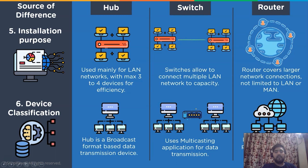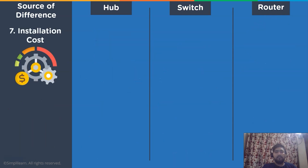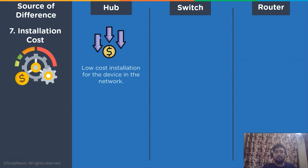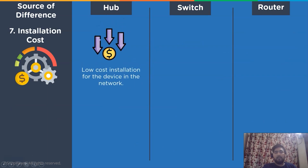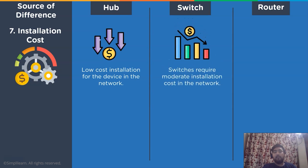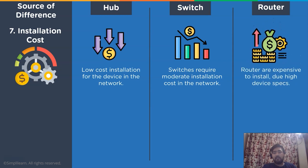Let's look at the difference in installation cost. A network hub can be installed very easily in a network channel as it does not perform any complex tasks. In the case of a switch, it requires moderate cost installation, as it performs some complex queries or protocols in the network channel. Whereas in the case of a router, it is the most expensive to install due to the high device specifications and performance-based protocols.